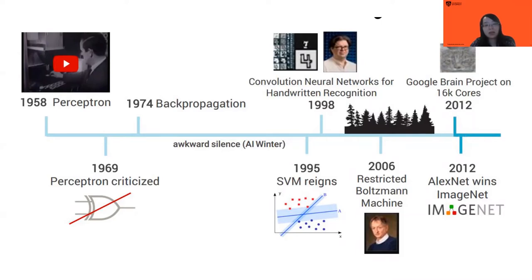SVM and random forest were widely used for classification algorithms. Another milestone: in 2012, AlexNet won the ImageNet challenge. ImageNet is a very large dataset — it includes 1,000 classes with more than 100 million images. Before deep learning, the accuracy on this dataset was very poor. But AlexNet achieved a very successful accuracy rate — it was the first time a machine learning technique beat humans on the 1,000-class recognition task.